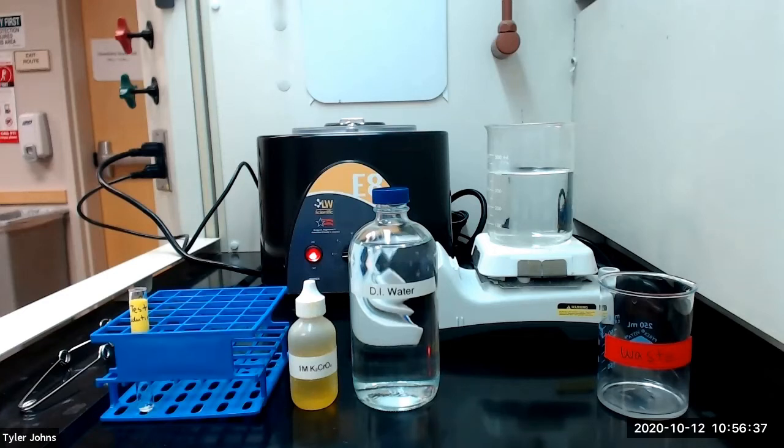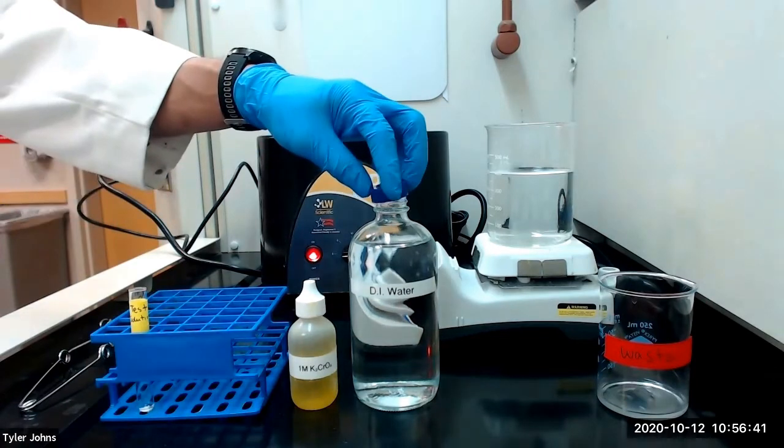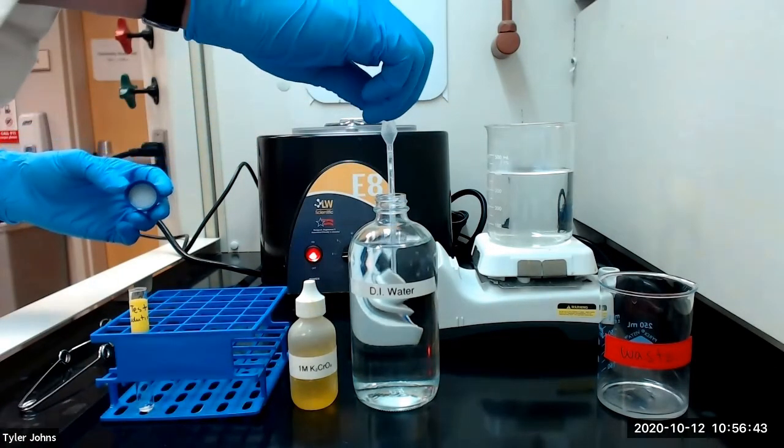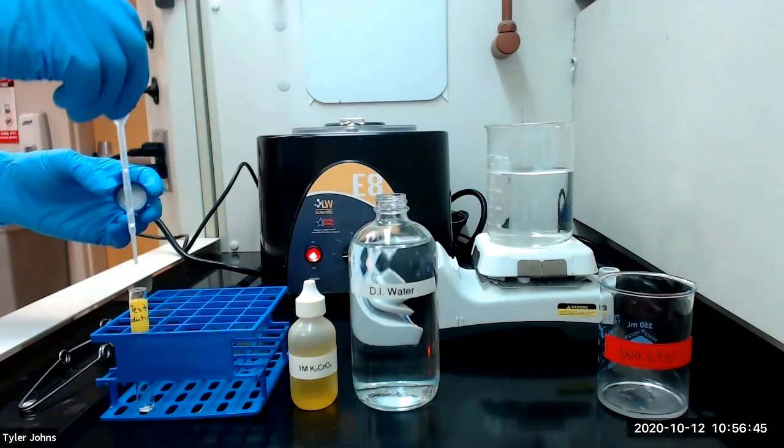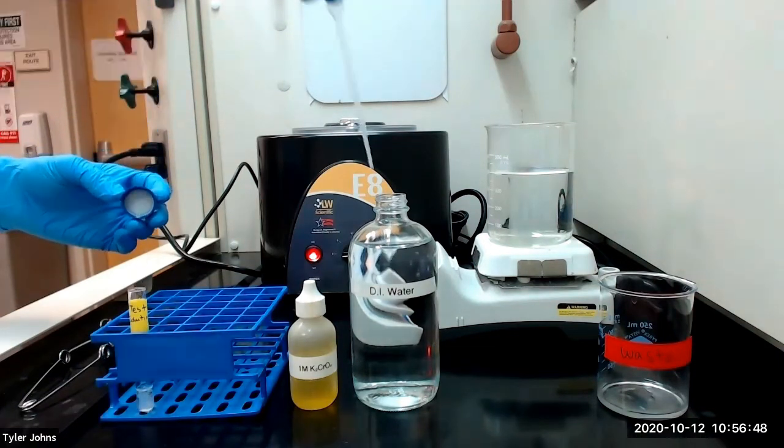We will now perform our test for lead ion. We're first going to add three milliliters of deionized water to our test tube with residue R1.